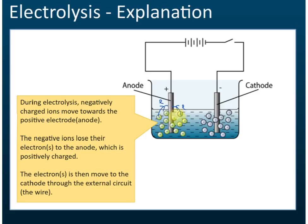Actually, it's the anode that attracts their electrons. This anode is connected to the cell's positive terminal, so it has a potential difference, and it will attract the electrons from the negative ions.